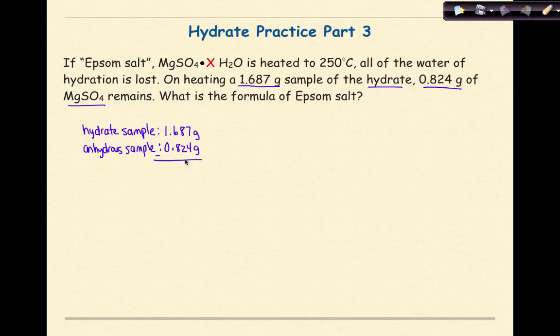And what we need to do here is subtract the two. And when we subtract the two, we find that the difference is 0.863 grams. So the hydrate sample has the water. The anhydrate sample does not have the water. The water has been removed. So that means this amount right here, the 0.863 grams, represents our amount of water.